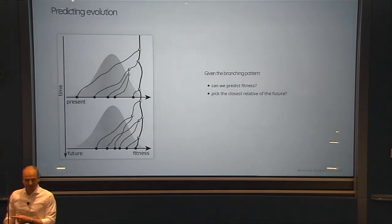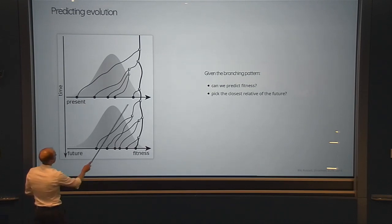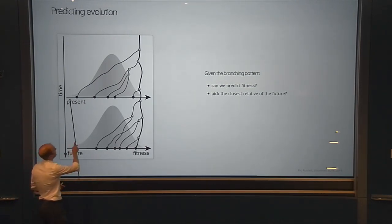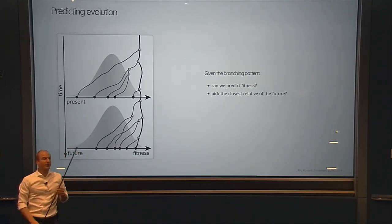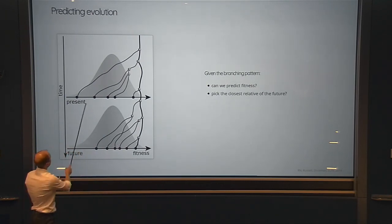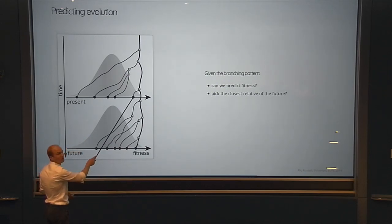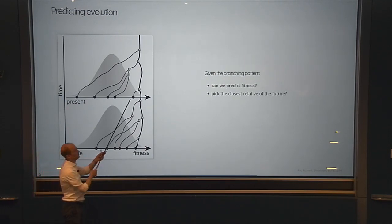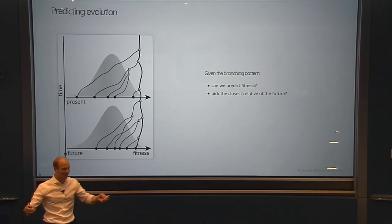We envision a scenario where you have a present population and a future population, with some unknown distribution of fitness in the background. You sample the present sequences and would like to find the isolate most closely related to the future — and then maybe put that into the flu vaccine. So the question is: does this work?